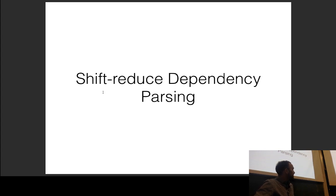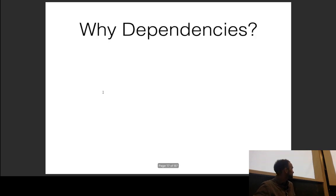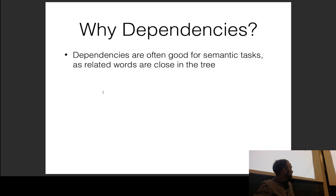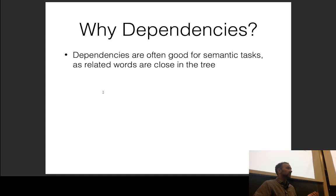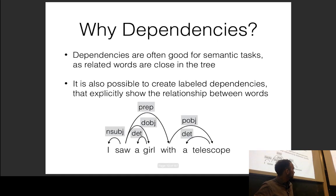A famous method for dependency parsing in the transition-based paradigm is shift-reduce dependency parsing. Why would we want dependencies in the first place? Dependencies give you a form of syntax and also a loose view of semantics. For example, with labeled dependencies for 'saw,' you can identify the subject 'I,' the object 'girl,' and the prepositional phrase 'with.'